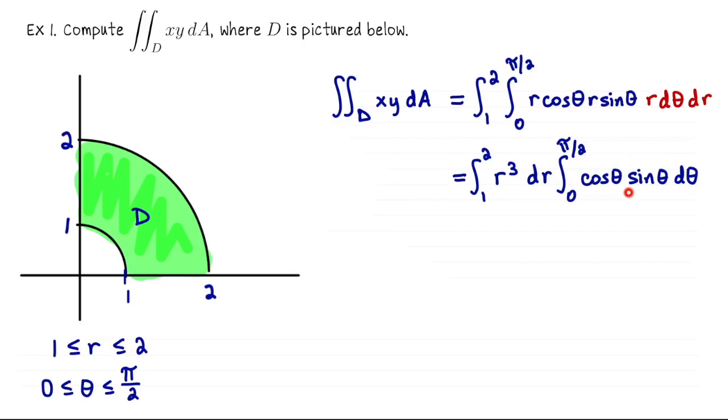For this latter integral, let's use u substitution. So we'll set u equal to sin θ, du will be cos θ dθ, and then when we rewrite this integral, we have to be careful to change our bounds. So the first integral is ready to go. The antiderivative of r³ is r⁴/4. We'll evaluate that at 2 and subtract off evaluating that at 1.